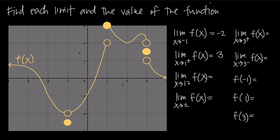What about the limit as x approaches 1 from the negative, or left-hand, side? Starting from the left and tracing the graph toward x equals 1, we approach the value y equals 2 on the y-axis. So the limit from the left is 2.